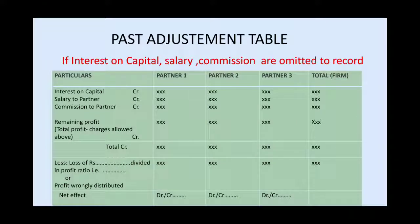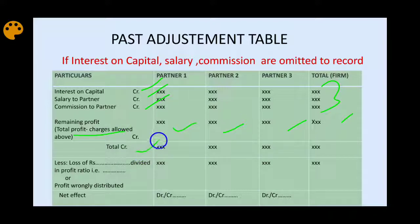When multiple items are missing — such as interest on capital, salary, and commission — we handle them together. First, credit each partner with their respective interest on capital, salary, and commission. Then subtract the total of these from the net profit to get the remaining profit. Divide the remaining profit in the profit-sharing ratio and credit it. Compare total credits with the profit already wrongly distributed to find the net debit or credit for each partner, then pass the adjustment entry.